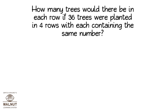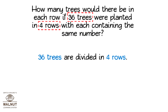What do we understand from this word problem? There are 36 trees. These are planted in four rows. So 36 trees are divided in four rows.